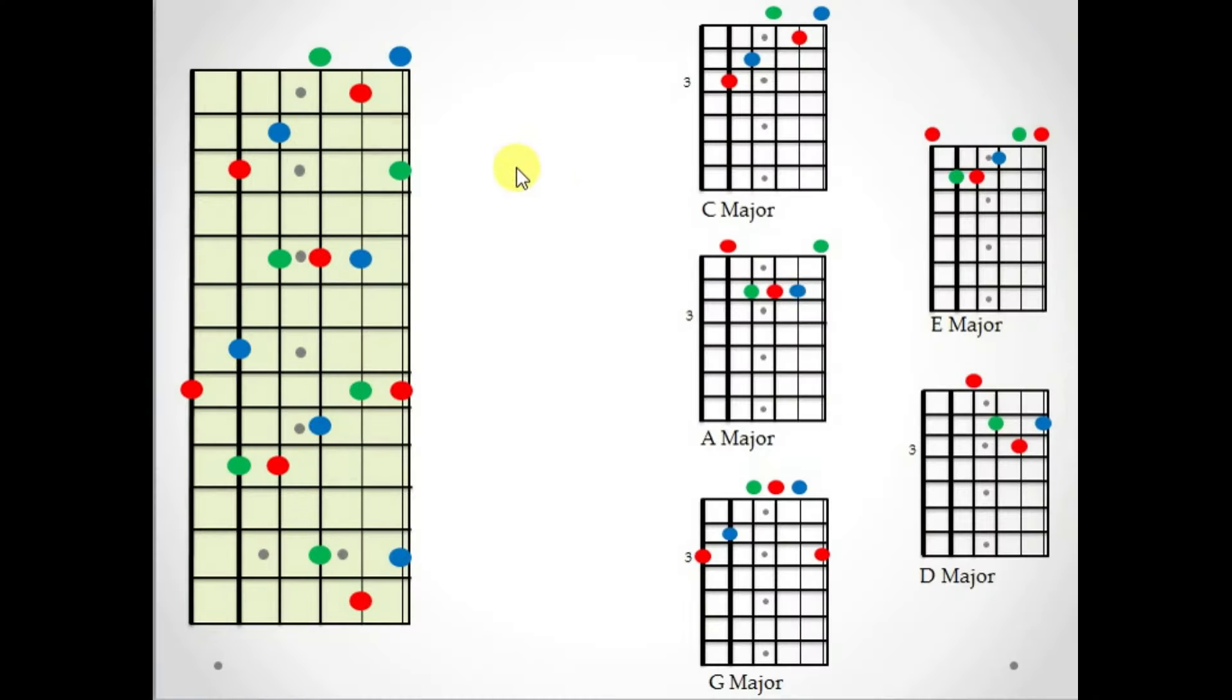Okay, so that's the CAGED system in a nutshell. Basically, what we're doing is we're taking our C major chord and playing it in an A shape, a G shape, all the way up and down the neck right here. And we're not just limited to the C chord. We can play an A major chord in the G shape, or in the E shape, the D shape, whatever we want. We could take an F sharp major chord and play it in all these shapes. That's the beauty of the CAGED system.